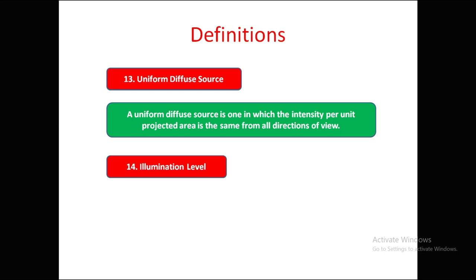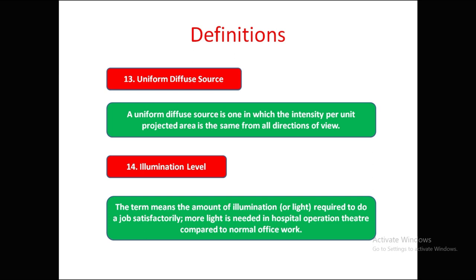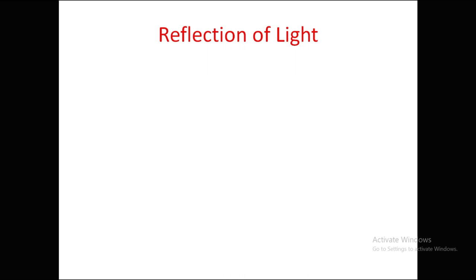Illumination level refers to how much illumination is required at a point to do a job satisfactorily. For example, more light is needed in a hospital operating theater compared to a normal office. The satisfactory level of illumination differs depending on the activity.